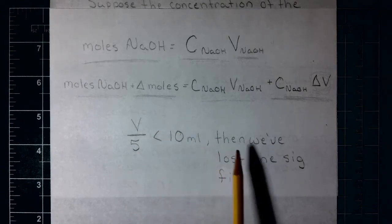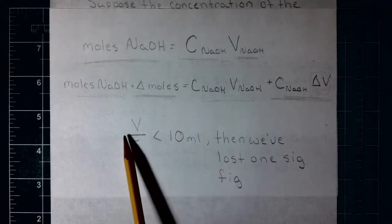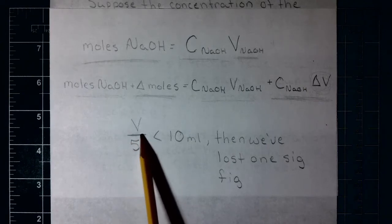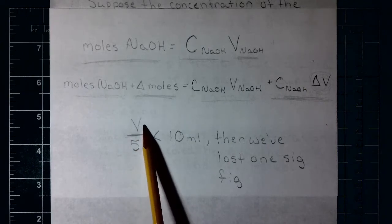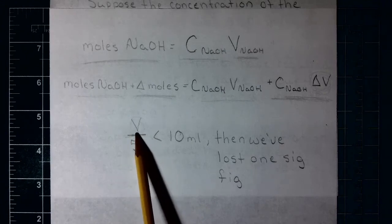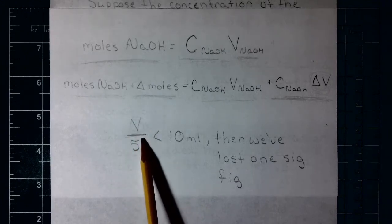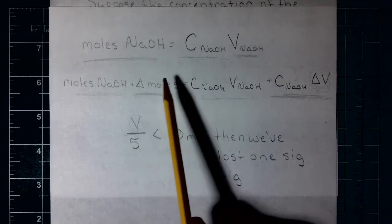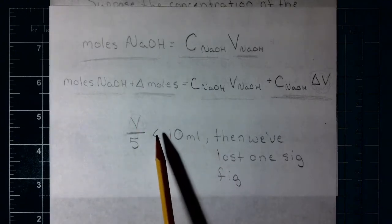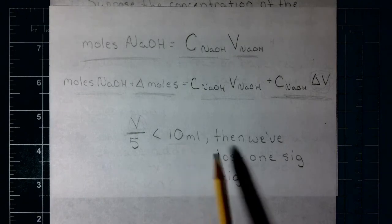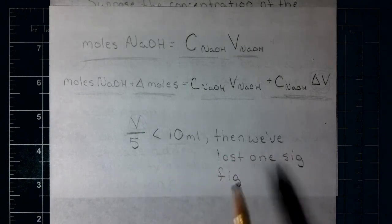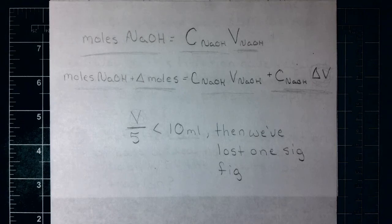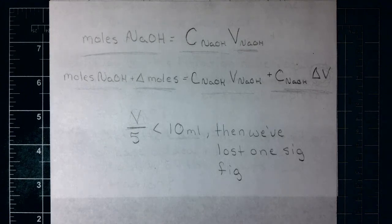We can see this when we think about significant figures: if the volume needed to reach the endpoint is divided by five because the solution is five times more concentrated, and that result is less than 10 milliliters, we actually lose a whole significant figure. In summary, we wind up having a more reliable titration when we use more dilute solutions with lower concentrations.